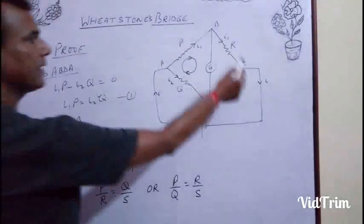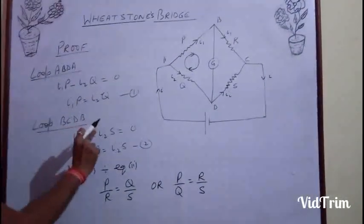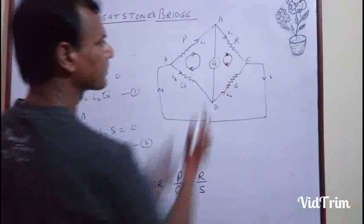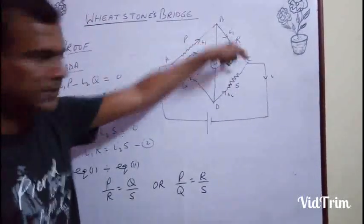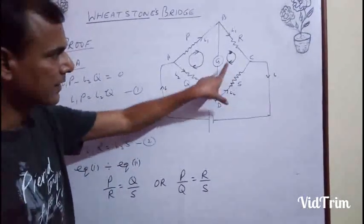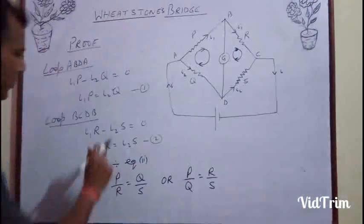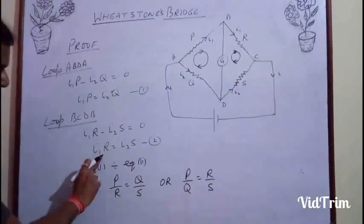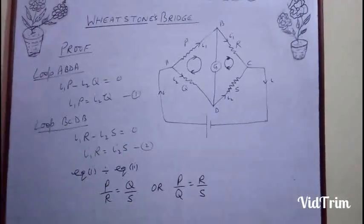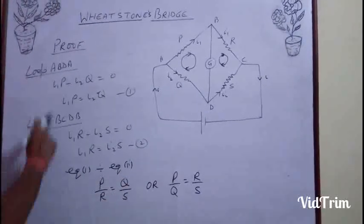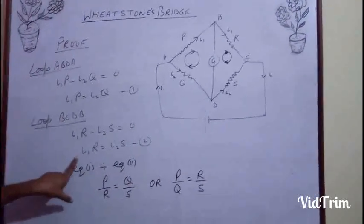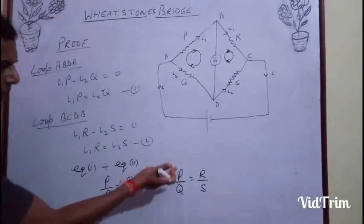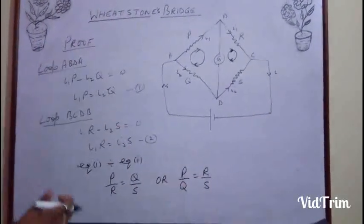Taking another loop BCDB, again taking clockwise direction as positive. We get I1·R as positive (same direction). Then I2·S is opposite in direction, so minus I2·S. Net EMF is zero as there is no source. This gives I1·R = I2·S. This is equation 2. Now, dividing equation 1 by equation 2, we get P upon R equals Q upon S, or you can write P upon Q equals R upon S. This is the proof of the Wheatstone bridge.